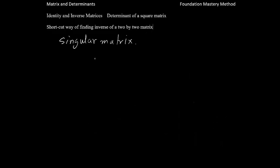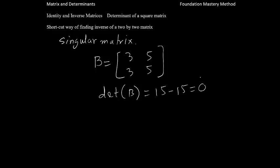Singular matrix. For example, I'm taking a matrix B, which is say that 3, 5, 3, 5 is a matrix. Now, if you find the determinant of B, you can see that 3 times 5 is 15, minus 3 times 5 is 15. So it is 0. So then B is a singular matrix. B does not have an inverse.